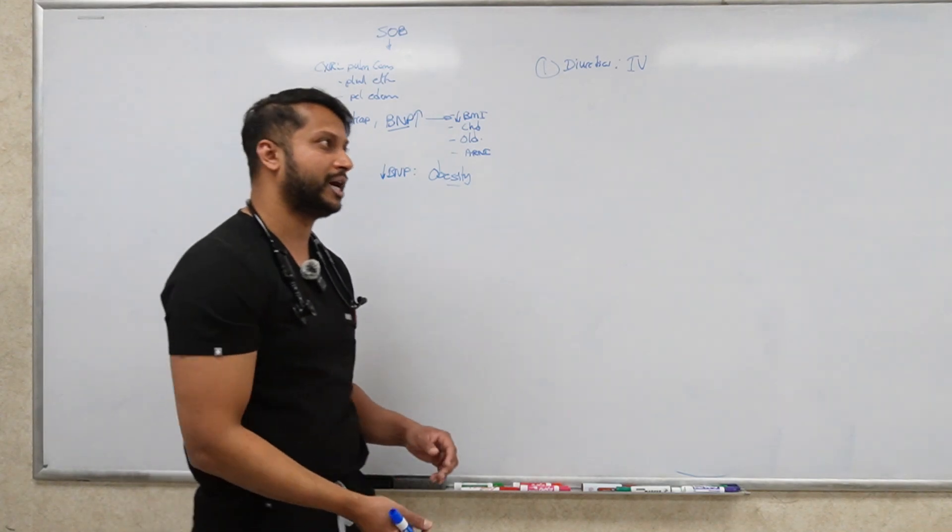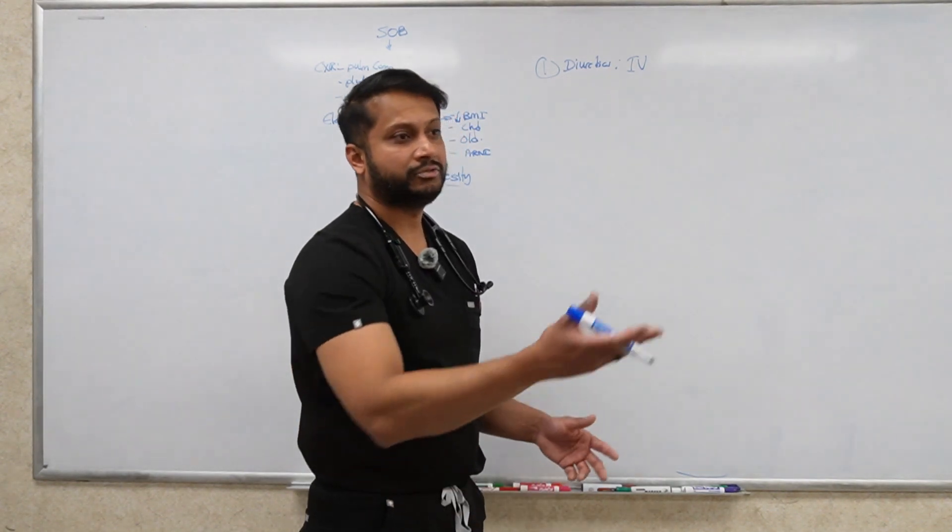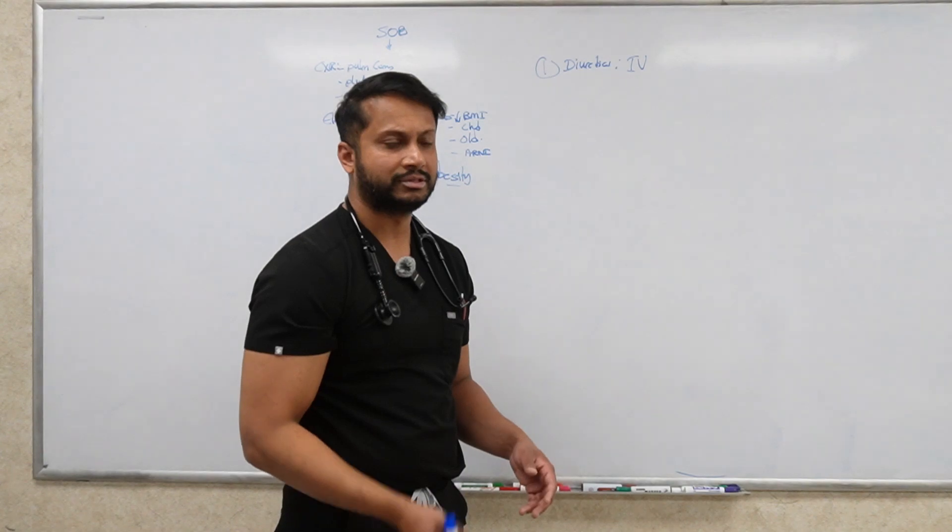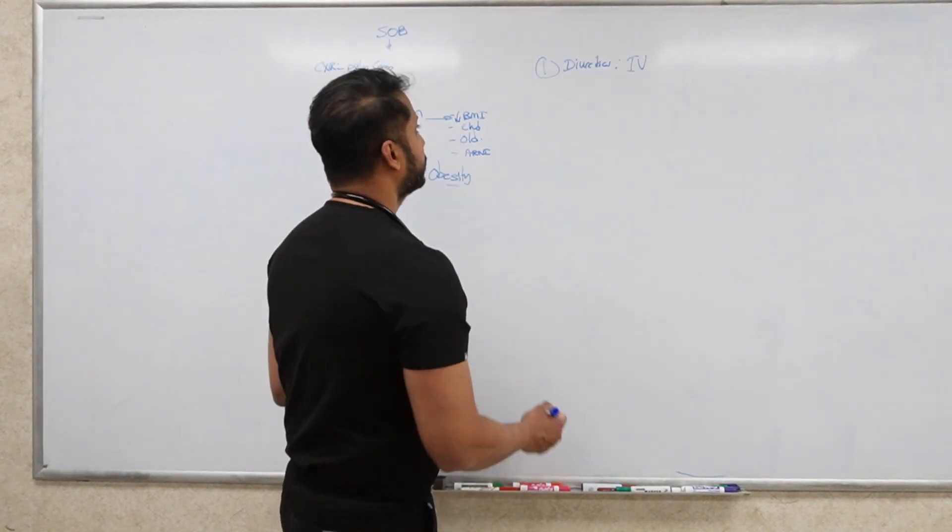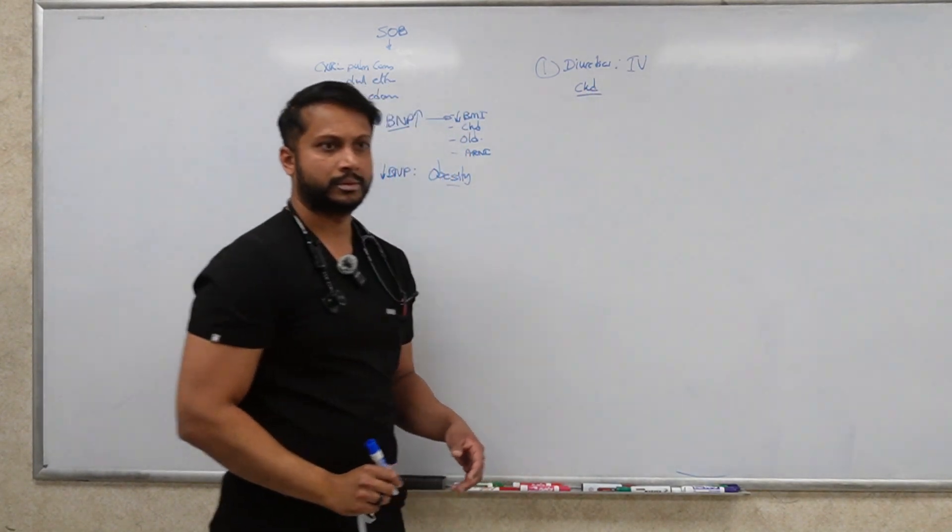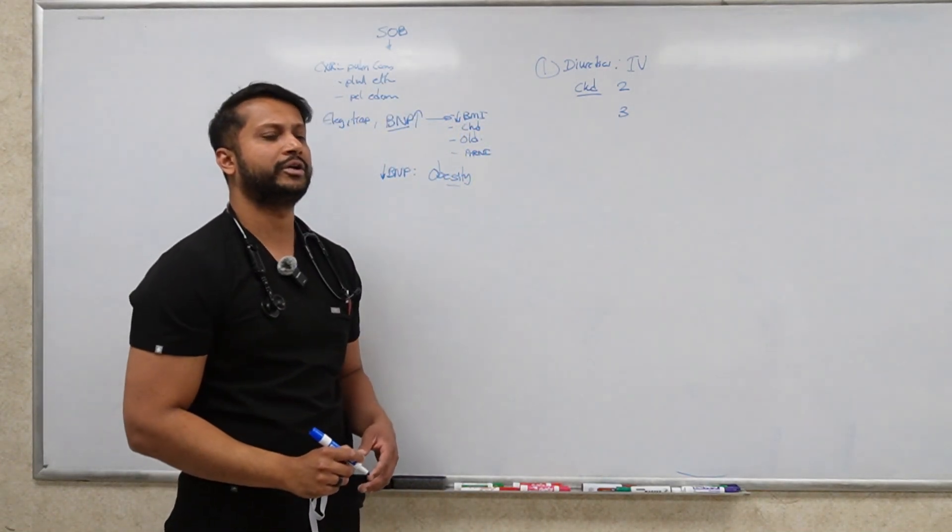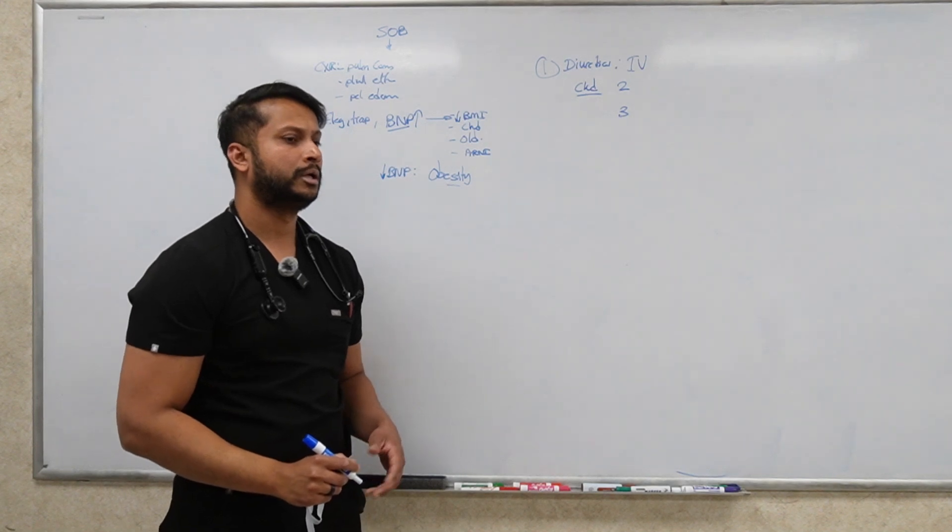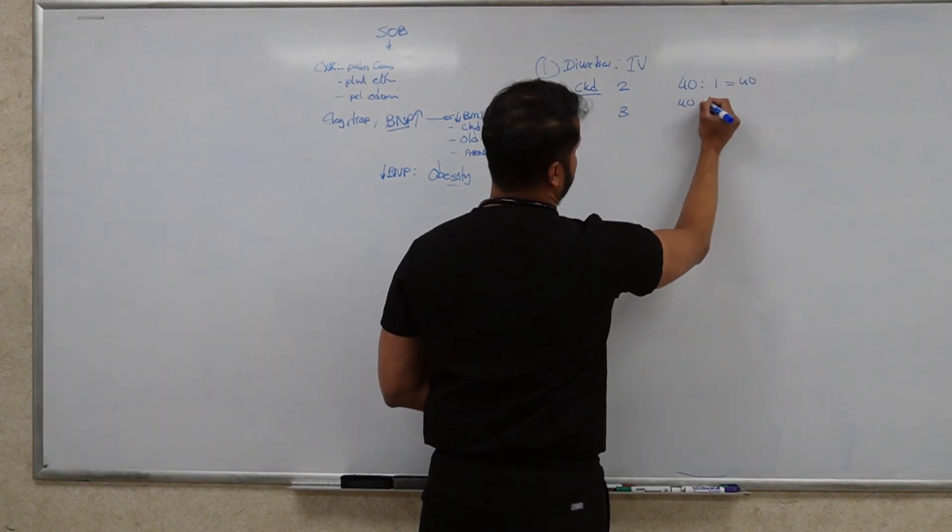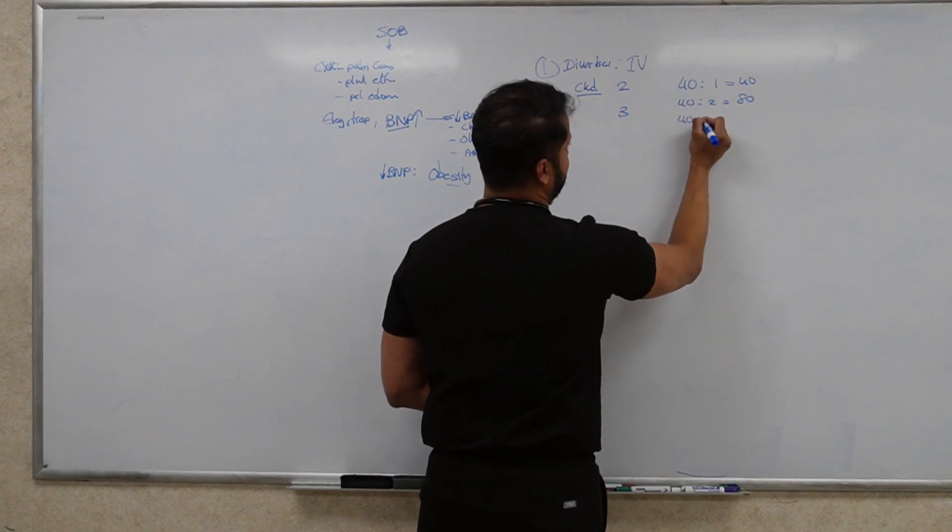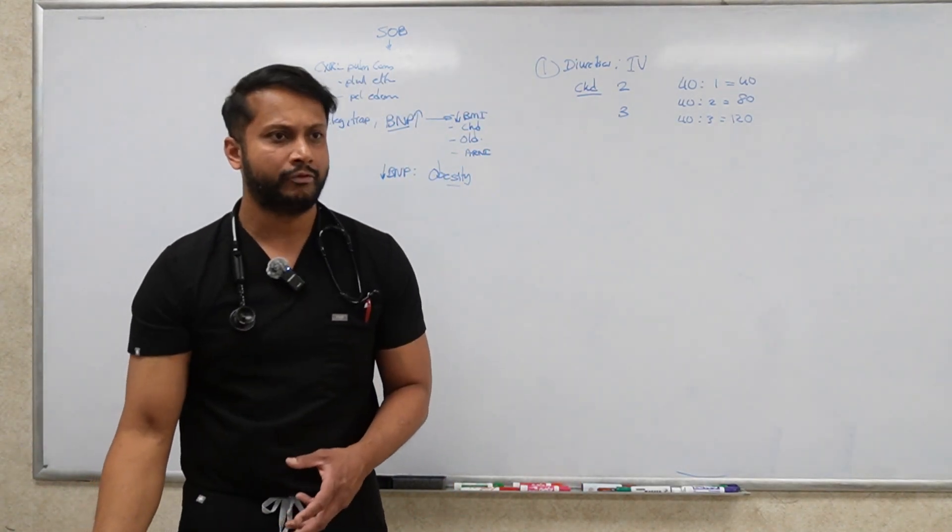You can use furosemide, you can use bumetanide, you can use torsemide, doesn't matter. Important thing is IV diuretic. How often do you have to give the diuretic? If you look at Lasix, which is furosemide, how many hours does it last? Six hours. You can give it as frequently as you need. Now if somebody's got chronic kidney disease, say the patient's creatinine is 2 or the patient's creatinine is 3, how much furosemide are you going to give? Is there a way to calculate the dose? It is 40 times creatinine.